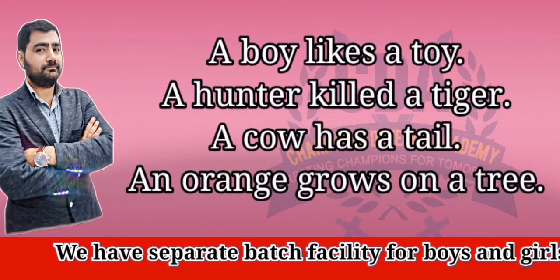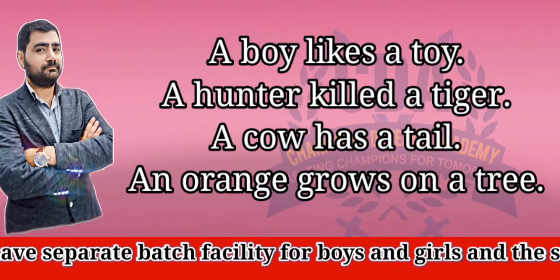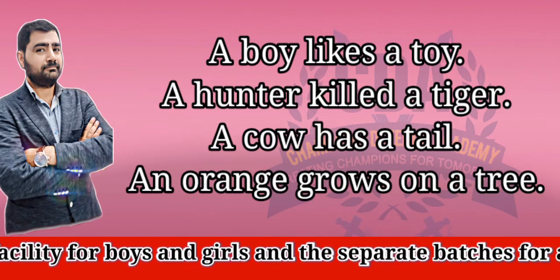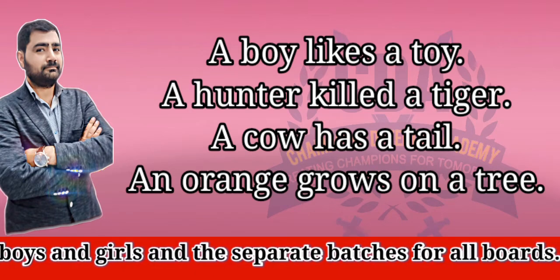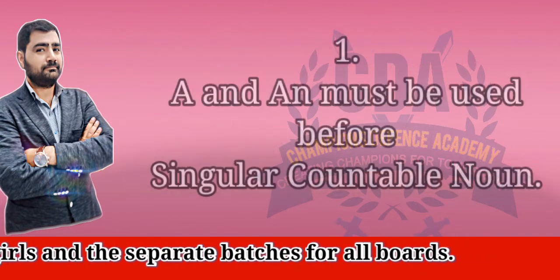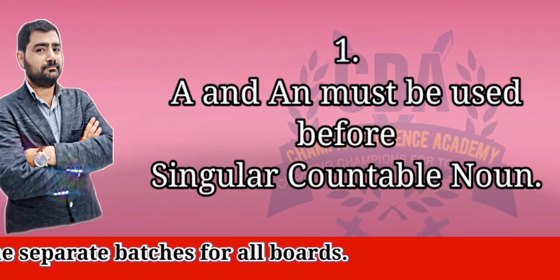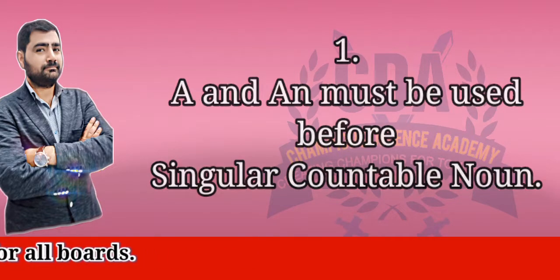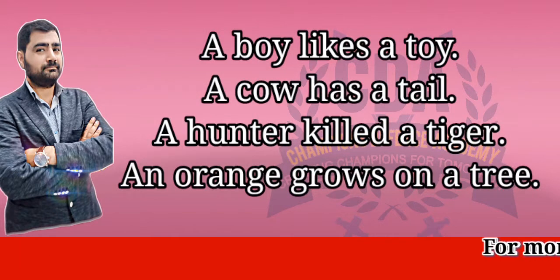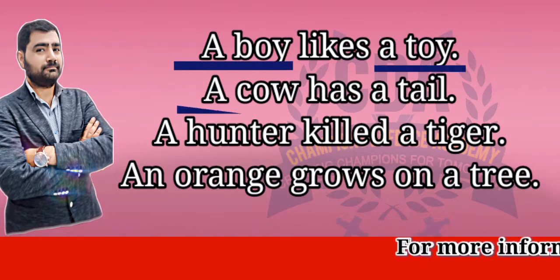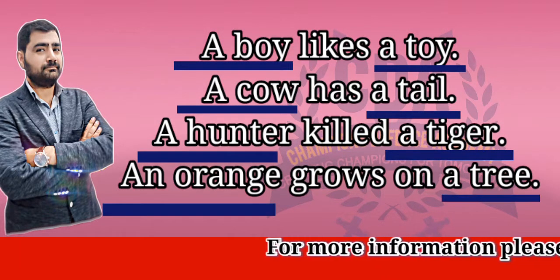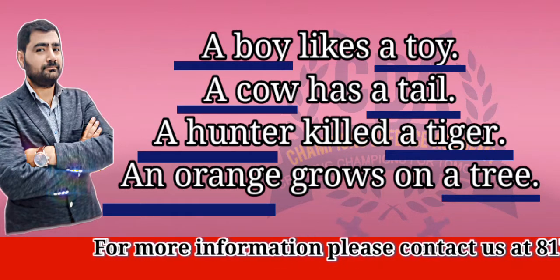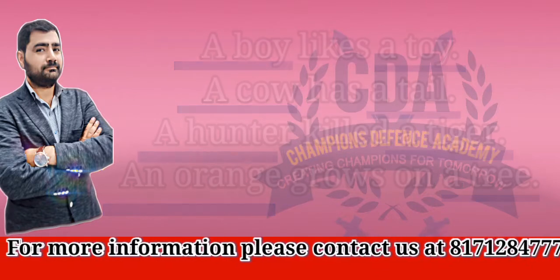A boy likes a toy. A hunter killed a tiger. A cow has a tail. An orange grows on a tree. For example: a boy, a toy, a cow, a tail, a hunter, a tiger, an orange, a tree, etc. — like we use in these given sentences.